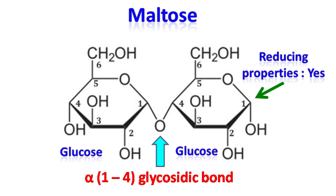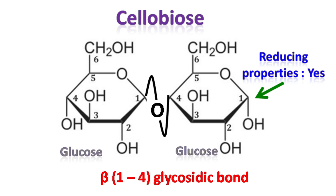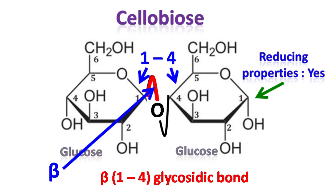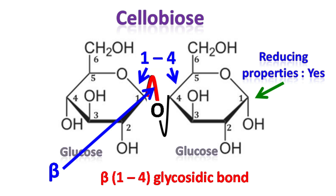Maltose can be hydrolyzed into two molecules of glucose by the enzyme maltase or by dilute acids. Cellobiose is similar to maltose, but instead of an alpha 1-4 glycosidic bond, it has a beta 1-4 glycosidic bond. Cellobiose is formed by hydrolysis of cellulose.